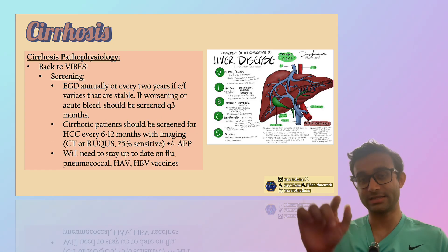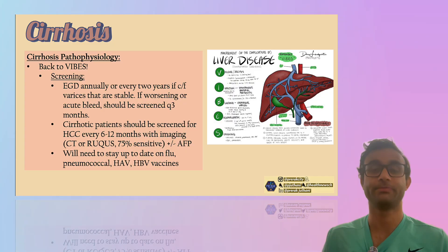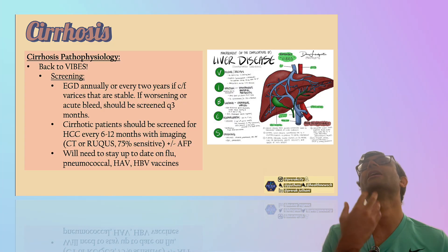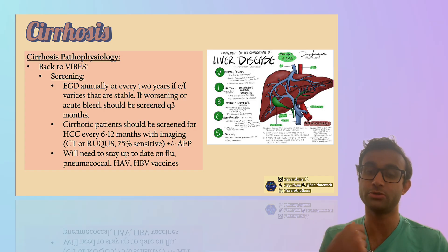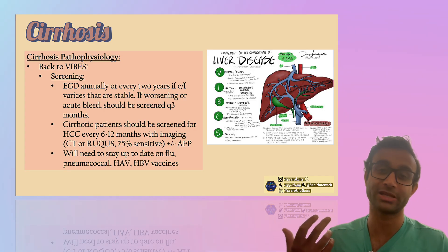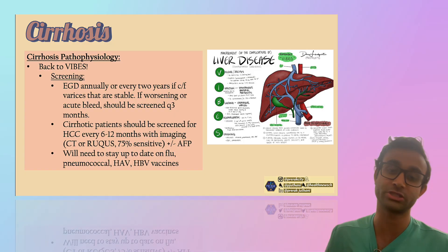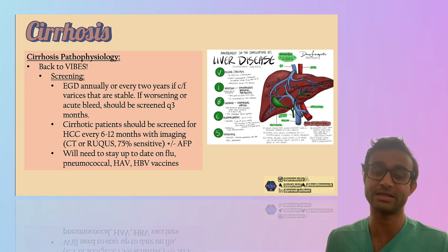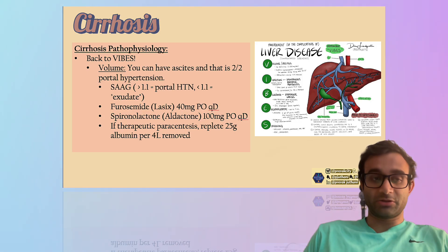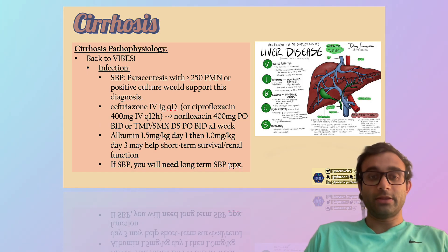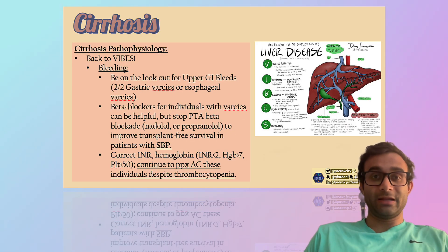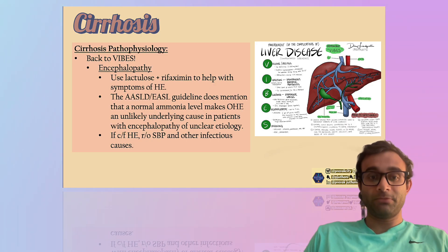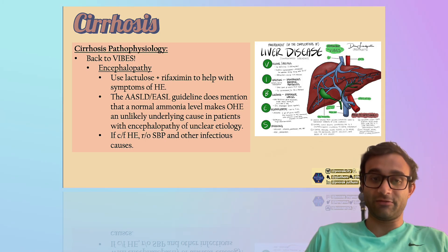The S in VIBES stands for screening. Patients with ascites or varices need an EGD at least every 1 to 2 years. Patients with cirrhosis need to be screened for hepatocellular carcinoma every 6 to 12 months with an ultrasound or CT scan, and an AFP level should be drawn. They also need to be up to date on their flu, pneumococcal, hepatitis A, and hepatitis B vaccines. To recap: V is for volume with Lasix and spironolactone; I is for infection with more than 250 PMNs diagnostic of SBP; B is for bleeding and upper GI variceal bleeding; E is for encephalopathy with lactulose and rifaximin; and S is for screening.